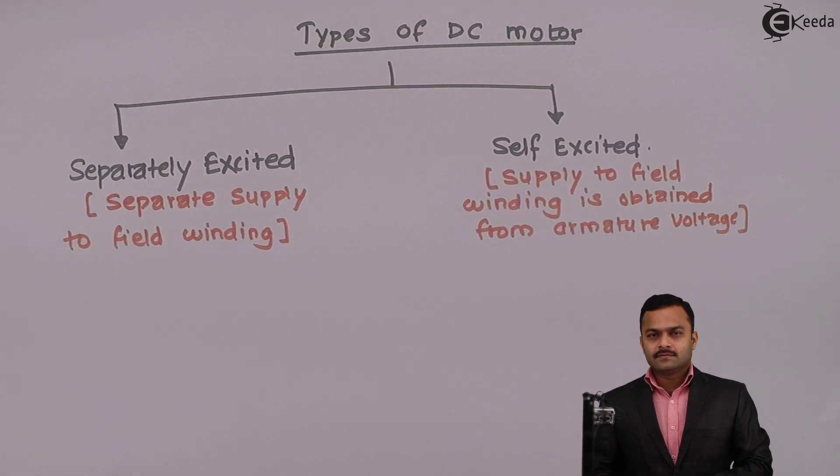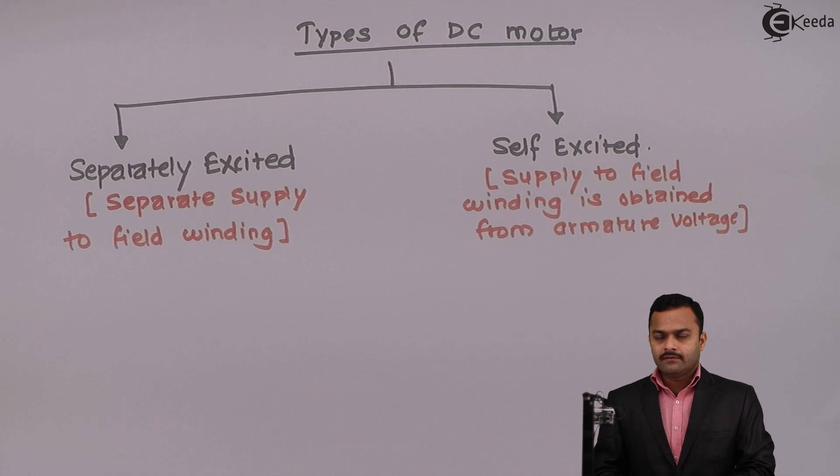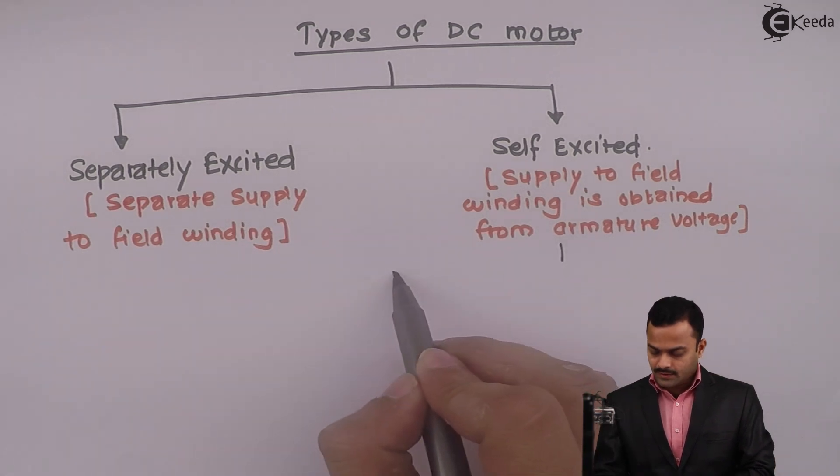In self-excited, depends upon connection of field winding, we are having further two different classes.